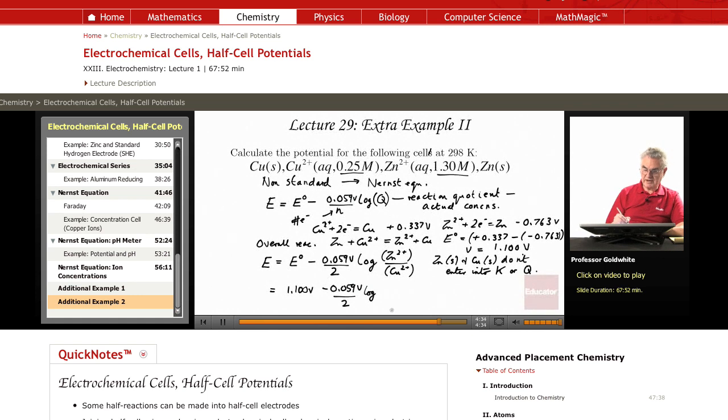Now we plug in the actual concentrations, 1.30 molar divided by 0.25 molar. And the difference is 1.08 volts. Changing the concentrations to these non-standard values has slightly reduced the potential of the cell.